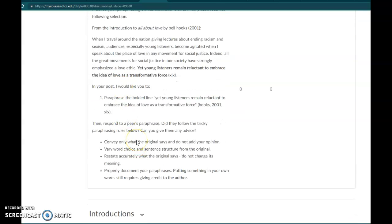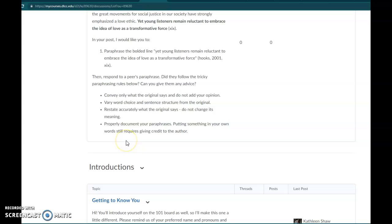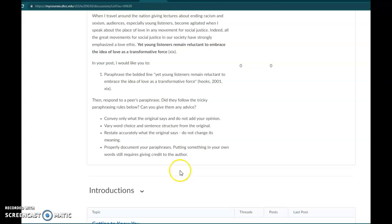Then what I want you to do after you've posted just your paraphrase, just the line paraphrased in your own words with a citation, is respond on a peer's paraphrase and see if there's anything that you can help them with. Paraphrasing can be tricky because when you paraphrase, you need to convey only what the original says without putting in your own opinion. You need to vary your word choice and sentence structure from the original, restate accurately what the original was saying, and properly document your paraphrases. Putting something in your own words still requires giving credit to the author.